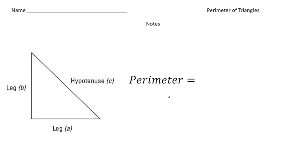So to find the perimeter of a right triangle, let's first review what the perimeter is. The perimeter is a distance around a certain object.